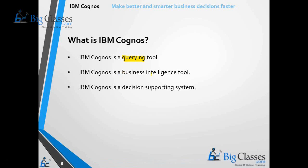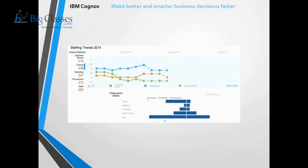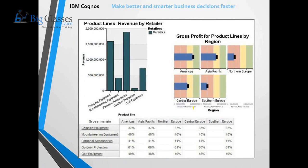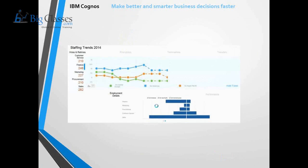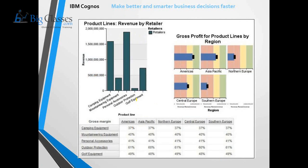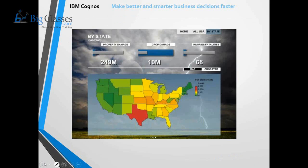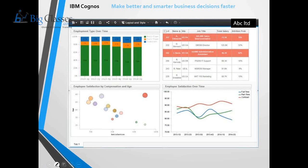Now let us see why we call this tool a business intelligence tool. I will show you some examples — we can create trends and dashboards like this. This report shows revenue product-line wise, with different product types, trends, and pivots. We can also create geographical map-type reports using this tool.